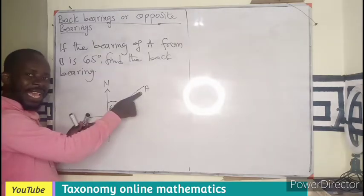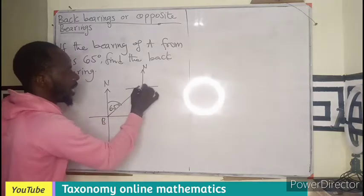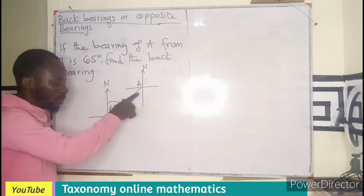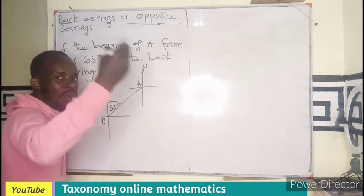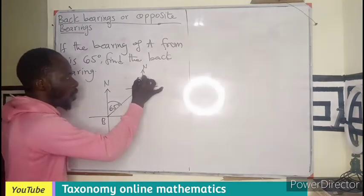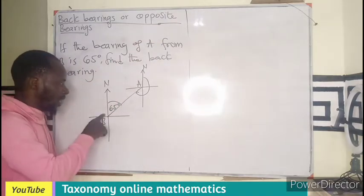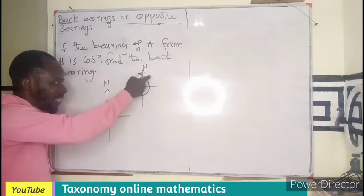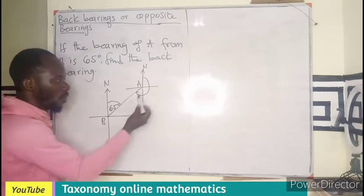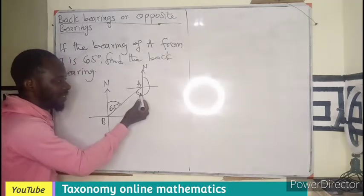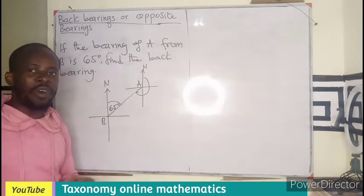We need the bearing of B from A. We draw a Cartesian plane at point A and indicate north, because bearing is measured from the north in a clockwise direction. We measure all the way until we meet the line joining A and B. Using the principles of plane geometry — the north lines are parallel, and the line AB acts as a transversal — it produces alternate angles.